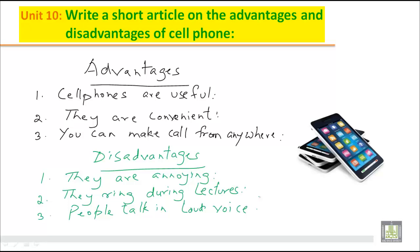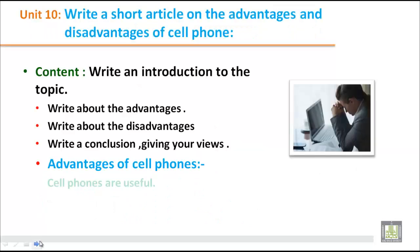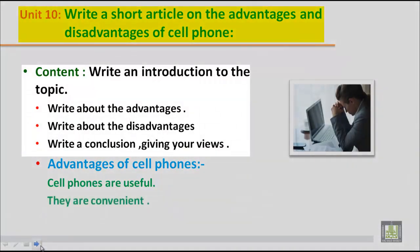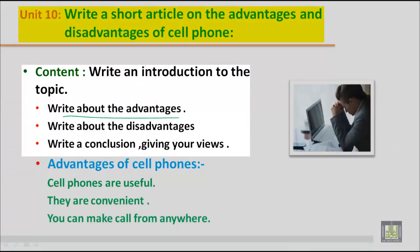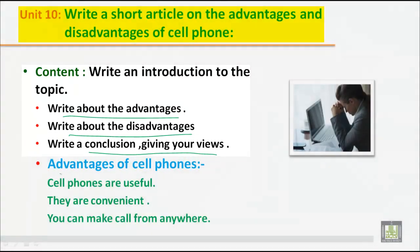We have listed three advantages and three disadvantages of cell phones. You can add one or two more sub-points to the main points, and then write your own conclusion — a summary about cell phones. You have to write an introduction to the topic, write about the advantages, write about the disadvantages, and then write a conclusion giving your own views, balancing both advantages and disadvantages.